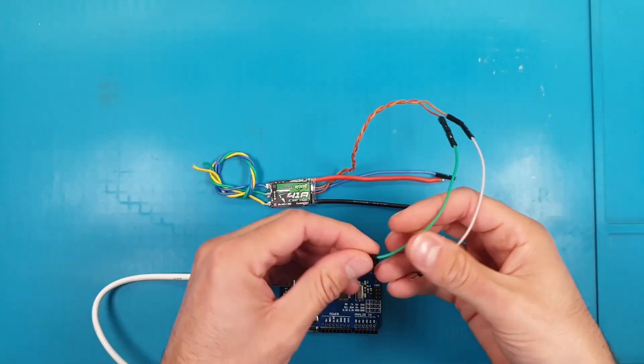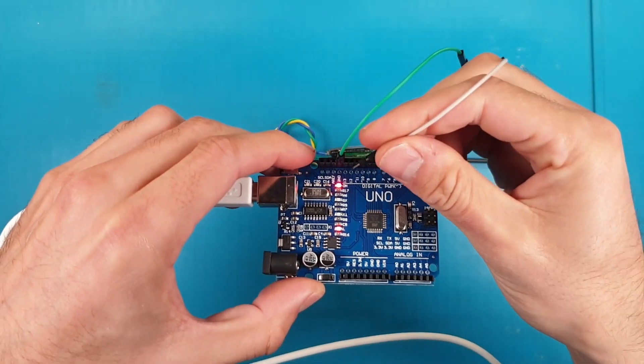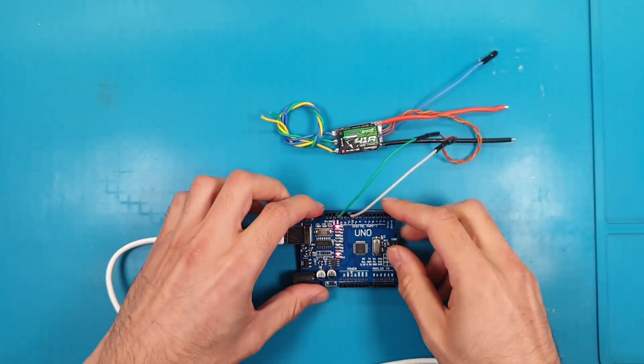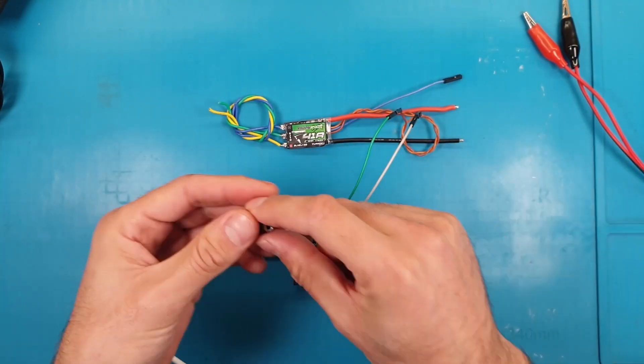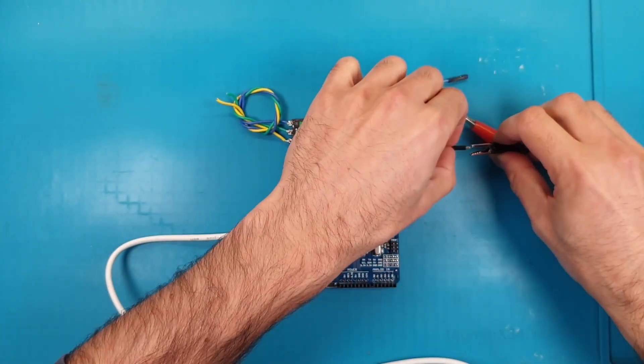Now we have to connect some jumper cables between the Arduino Uno and the ESC. One is the ground cable and the other is the signal. The signal cable connects to pin number 11, and now we have to power the ESC.